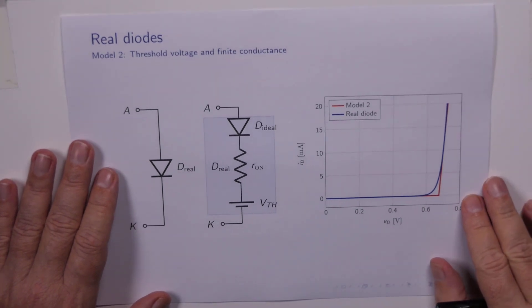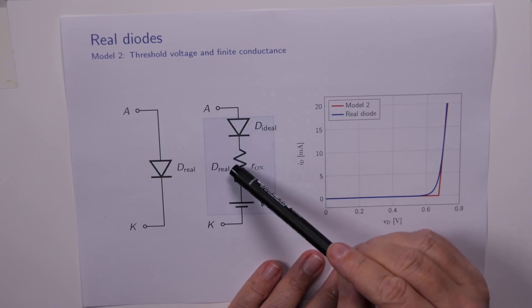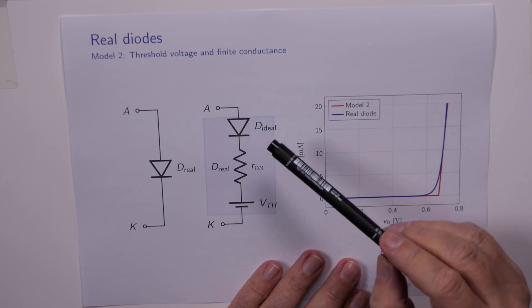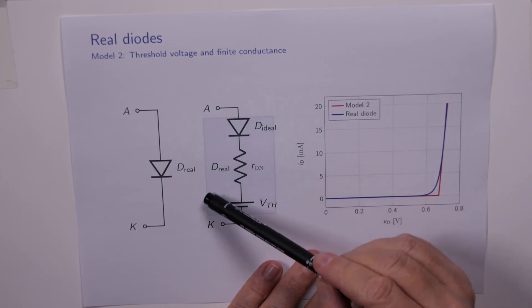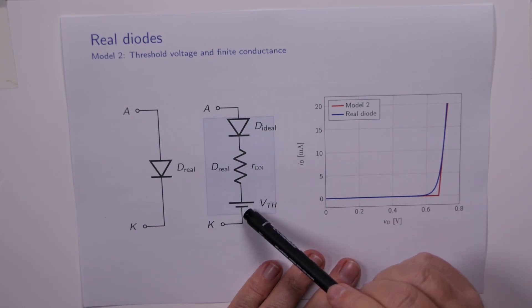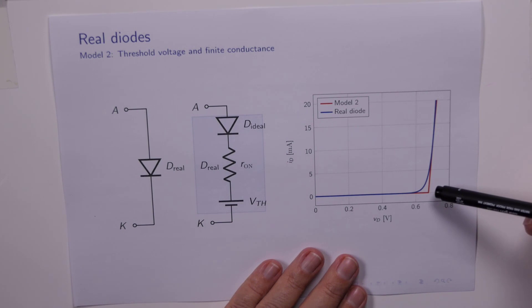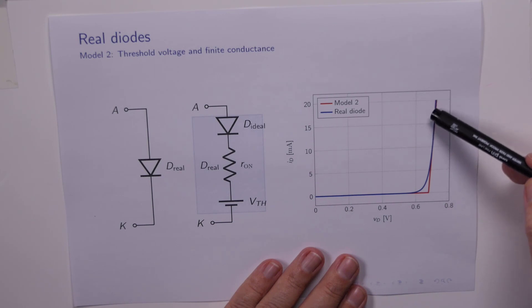So we've now augmented our diagram with this resistor that we're calling R-ON. So D-real, which is this entire block here, consists of D-ideal, the series resistor, and the threshold voltage. And here's the result. As you can see, the model now doesn't have infinite slope there. In fact, the slope there is equal to 1 over R-ON. And it does a much better job of sticking to what the real diode is doing.